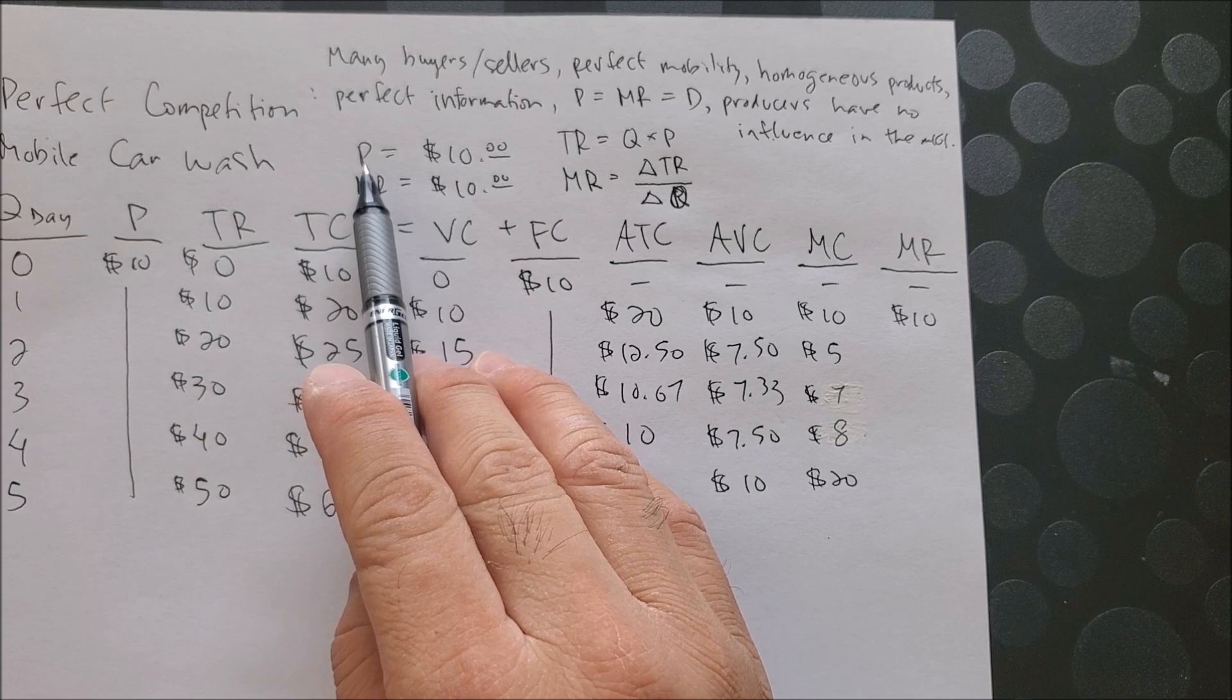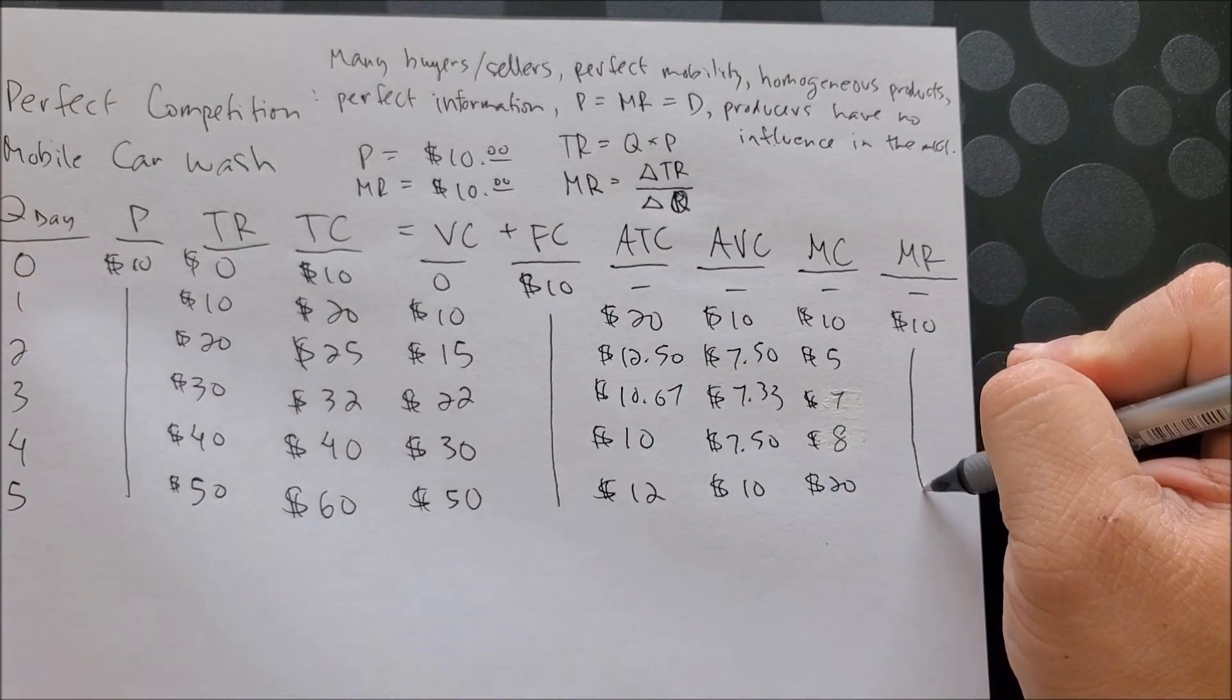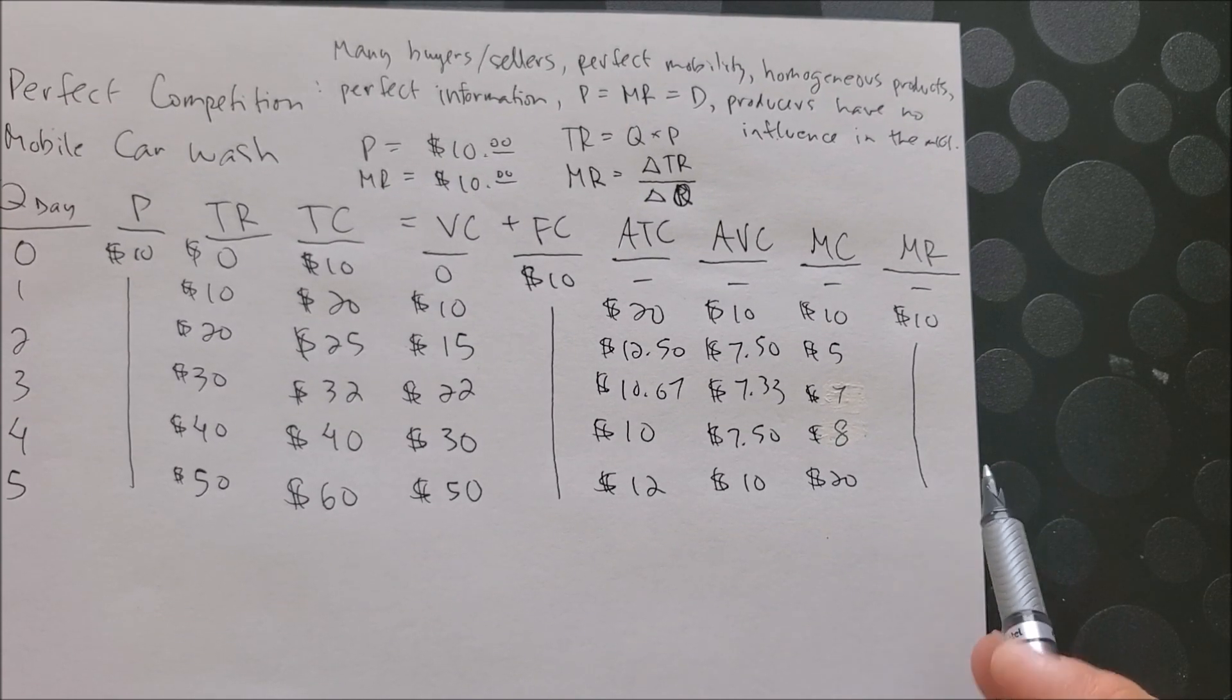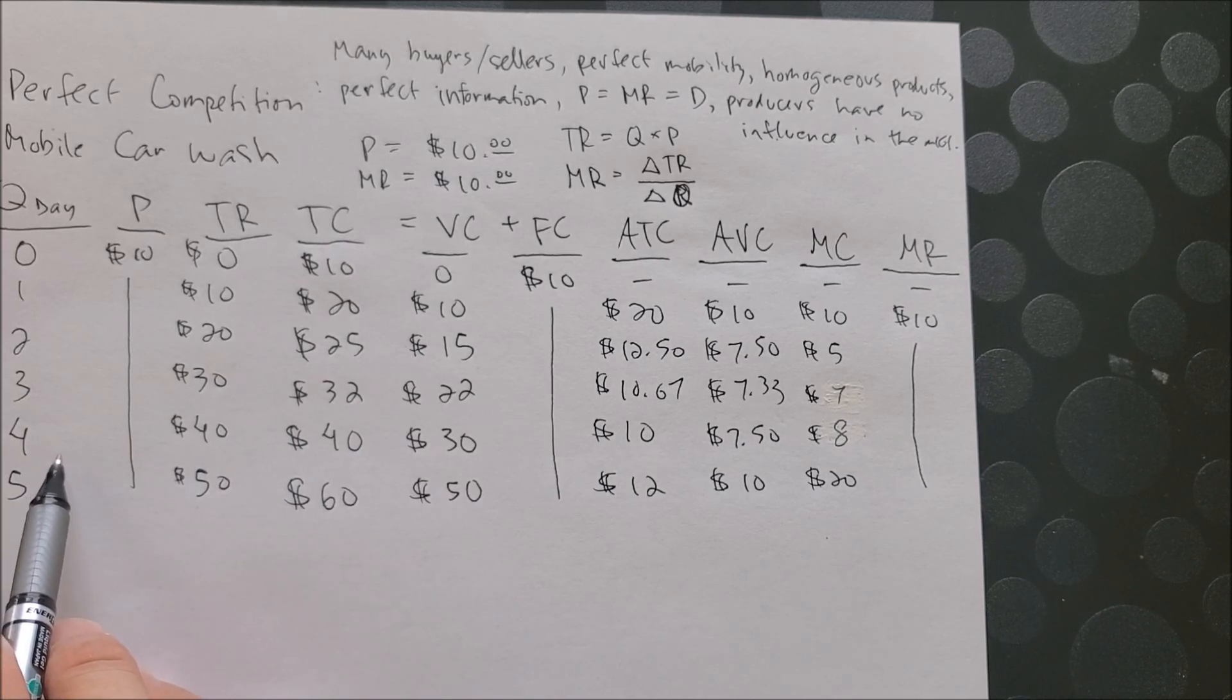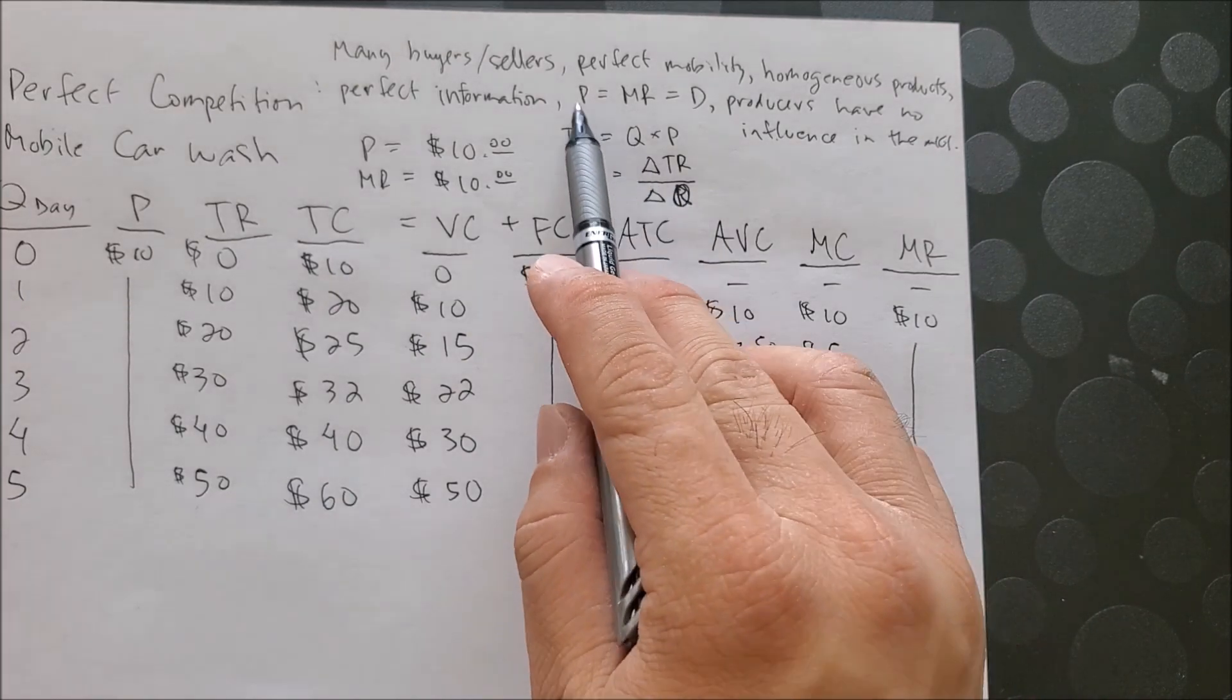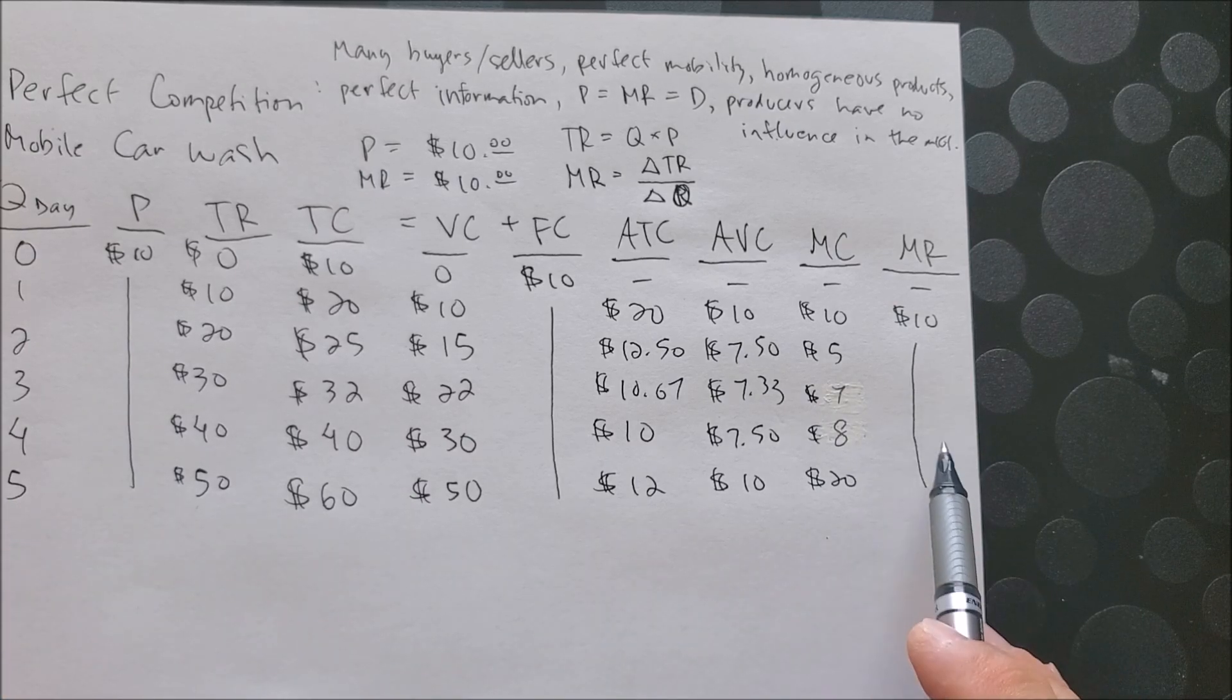Now since price is equal to MR at ten dollars based on this assumption, we then assume that it's going to be ten dollars all the way down. From four to five of the quantity - and to show that, here we have four to five vehicles, fifty minus forty (that's the change in TR) over five minus four (the change in quantity) - which gives us ten dollars. So again we can say that price, which is the demand curve, is equal to MR. Therefore we have price at ten dollars and marginal revenue at ten dollars.